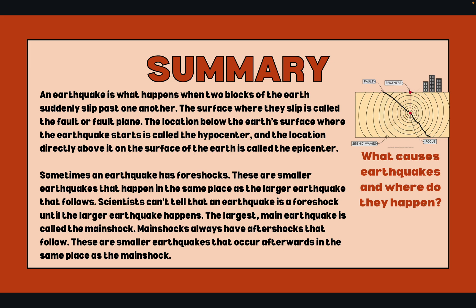Sometimes an earthquake has foreshocks — these are smaller earthquakes that happen in the same place as the larger earthquake that follows. Scientists can't tell that an earthquake is a foreshock until the larger earthquake happens. The largest main earthquake is called the main shock. Main shocks always have aftershocks that follow — these are smaller earthquakes that occur afterwards in the same place as the main shock.